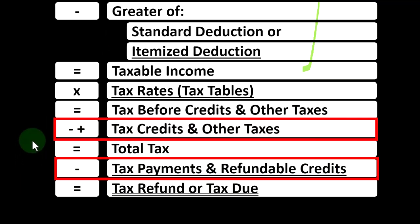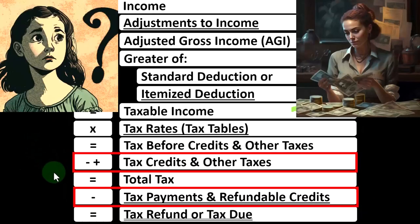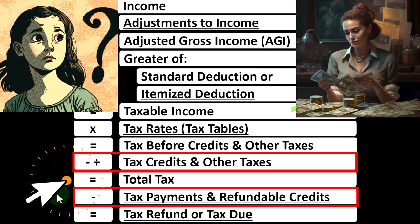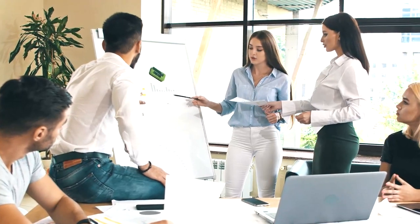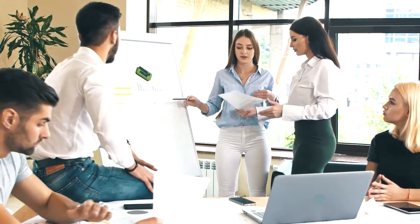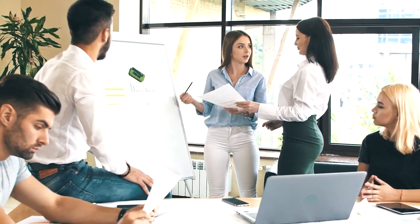Credits are broken out into non-refundable and refundable components. A non-refundable credit generally will not take our tax liability below zero. Refundable credits go beyond taxes — they use the tax code as a benefit program to provide a 'refund' that isn't really a refund in the traditional sense; it's more like a benefit program.